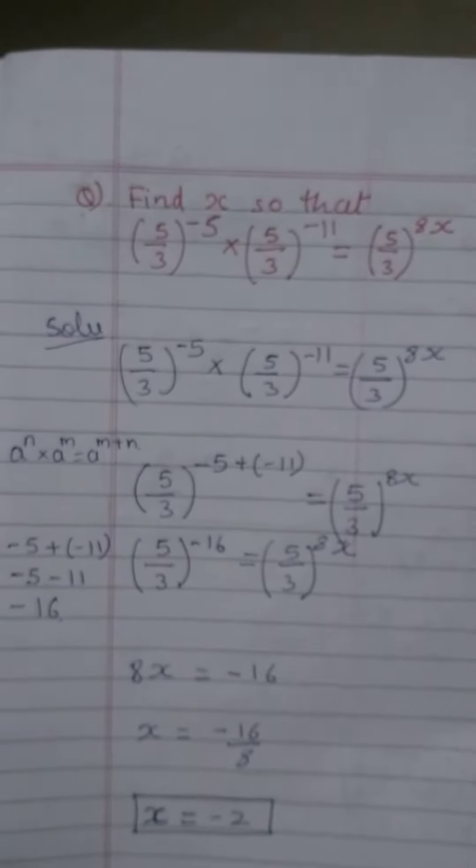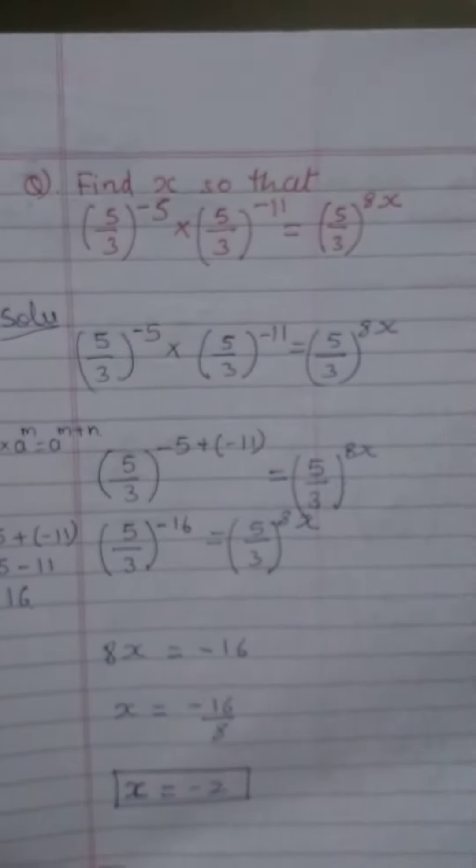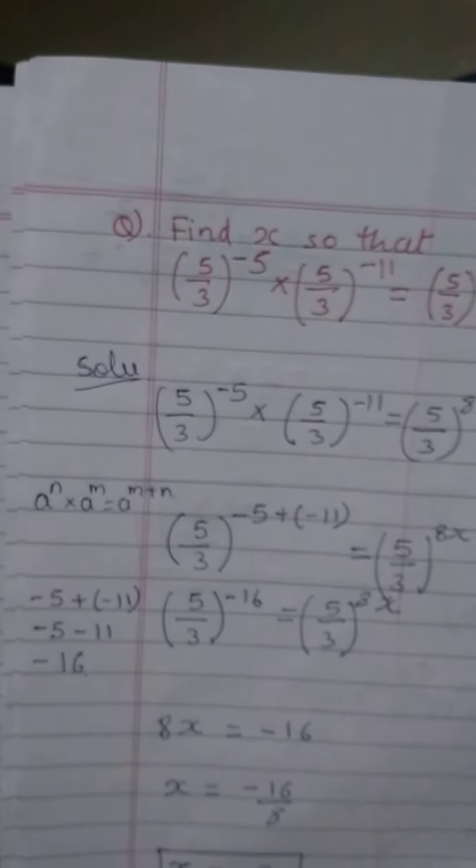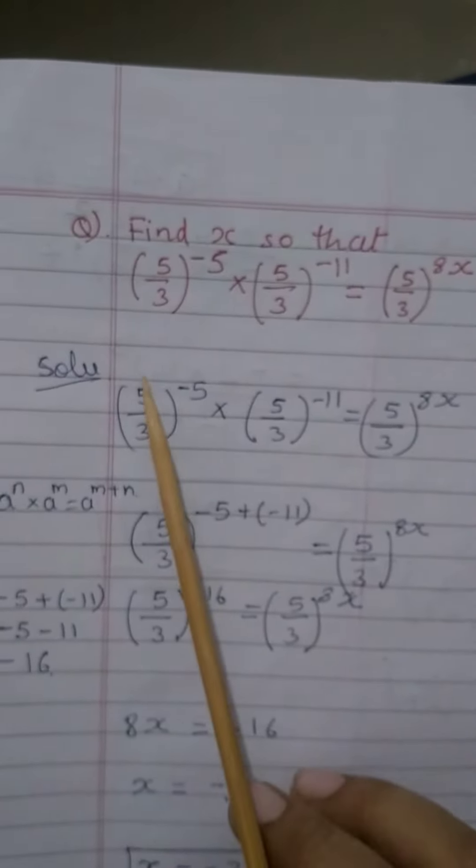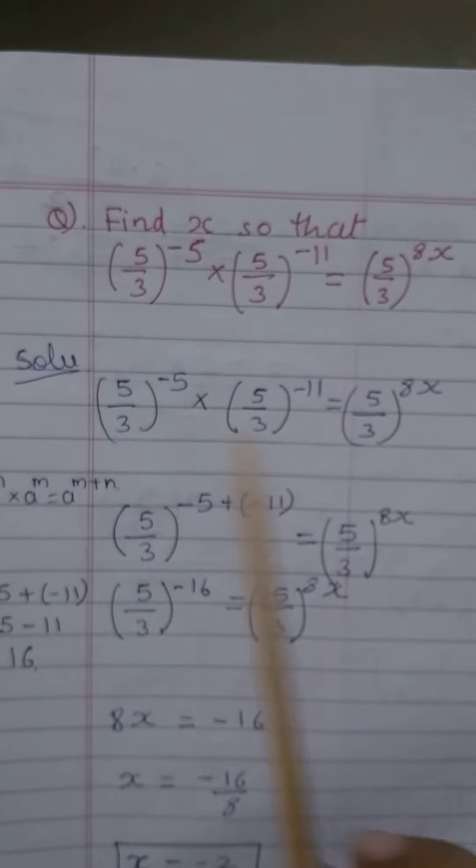Now how will you solve this sum? So let us understand that. Here you have to first observe the sum and think about how you will proceed. So here we can easily see that 5 by 3 is common here.